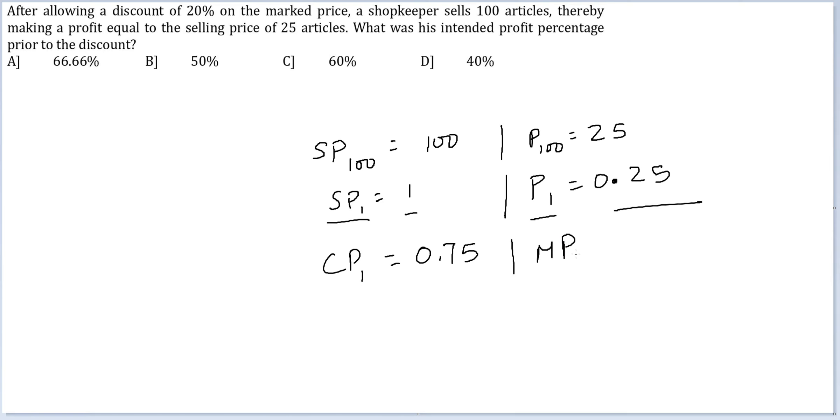Also, marked price for 1 article times 4/5 gives me 1, because there is a discount of 20%. So marked price for 1 is equal to 1.25.